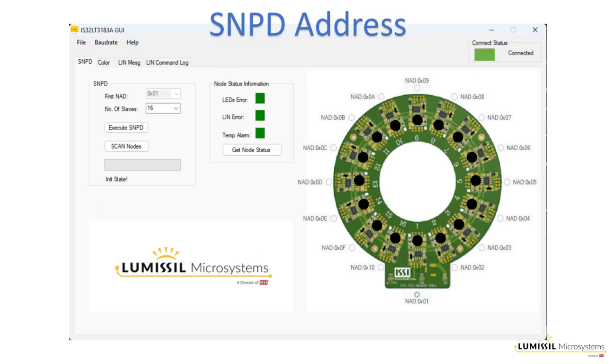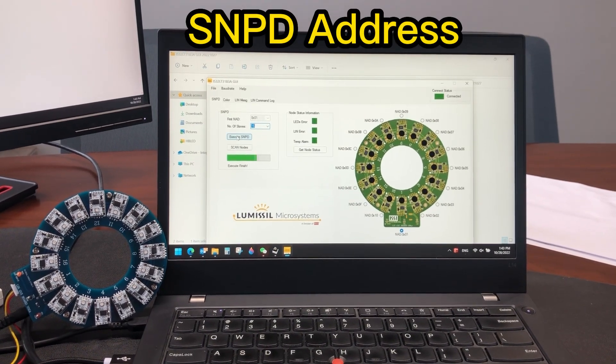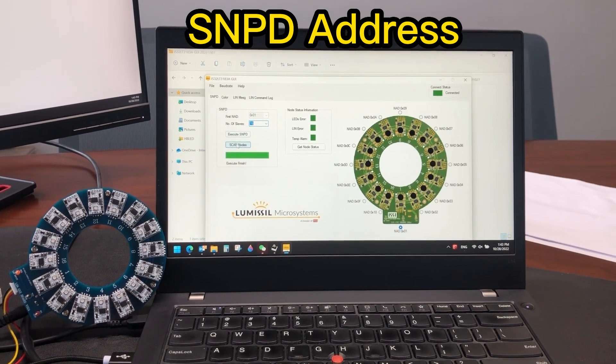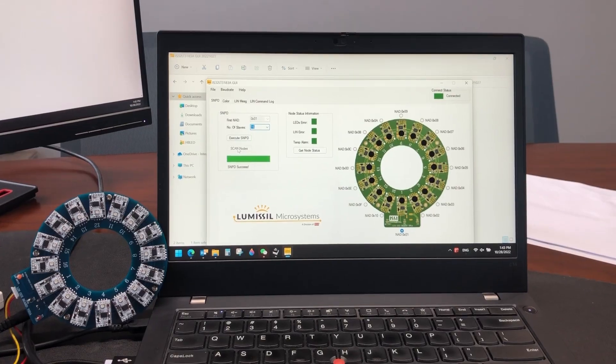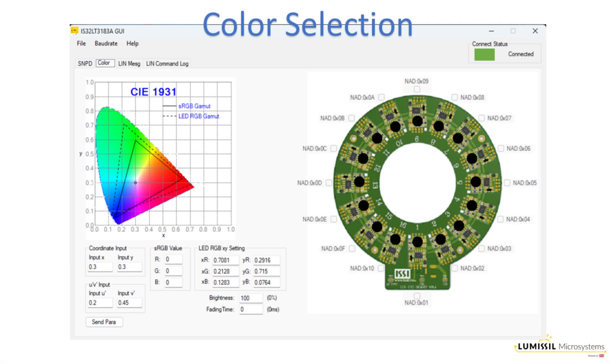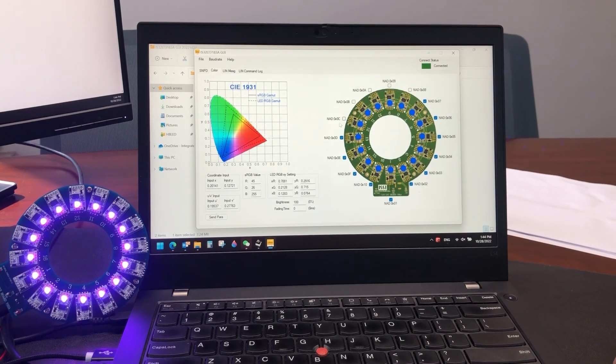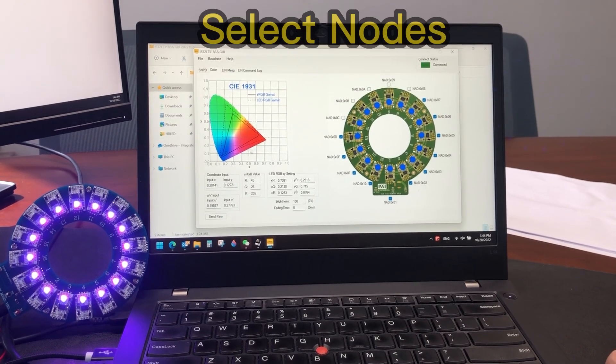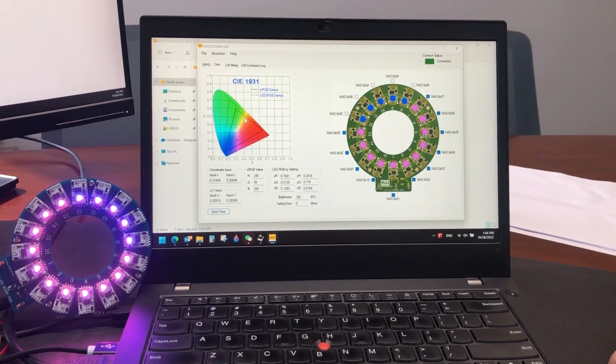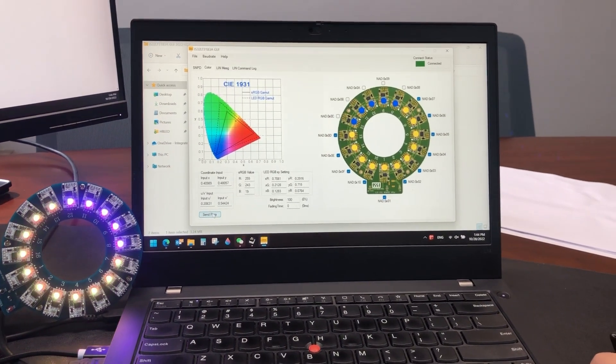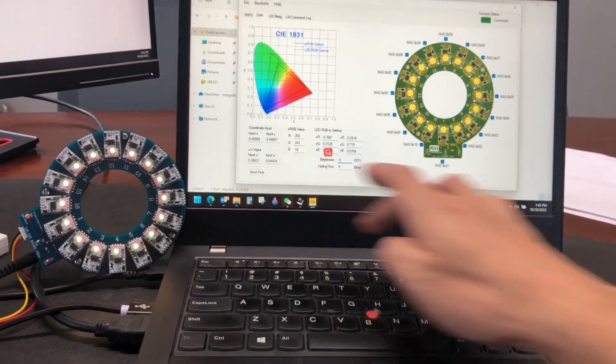First, select the SNPD tab to assign addresses to each LIN responder module. Next, select the color setting tab. In this section, use the mouse to select which modules on the circle will be affected by the color selection. Colors are selected by either mouse clicking on the CIE 1931 graph or by manually entering color or brightness level parameters in the section below the graph.